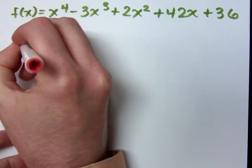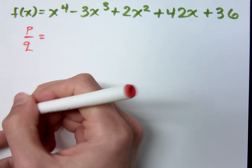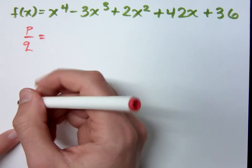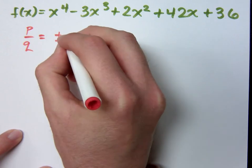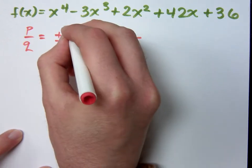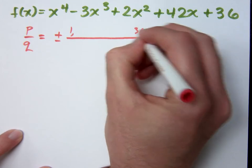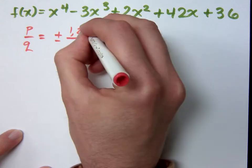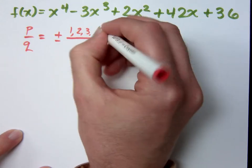Let's check our p over q. Where do the factors of p come from? 36. Why are you laughing at that? Because I've got like 8 factors, 9 factors already. I've got 1 and 36, 2 and 18, 3 and 12.